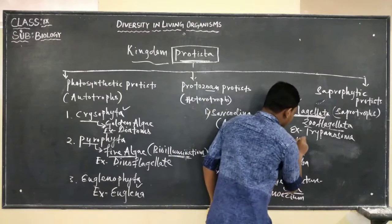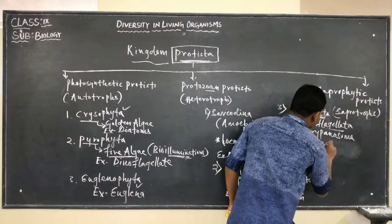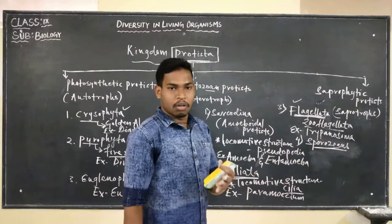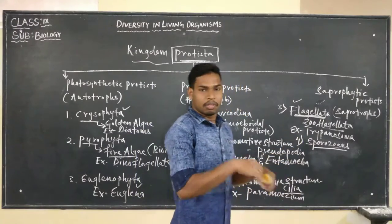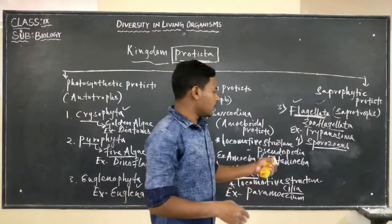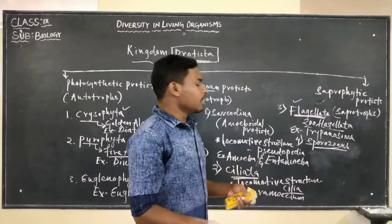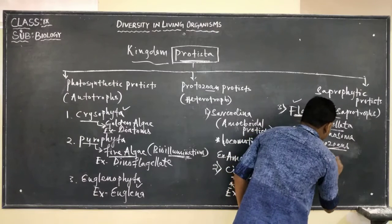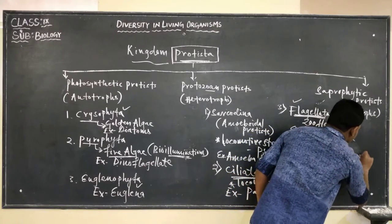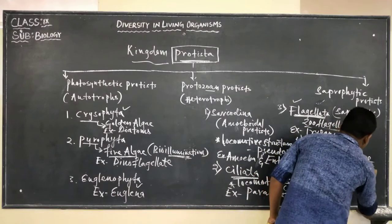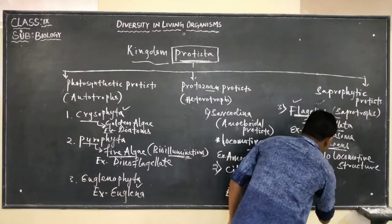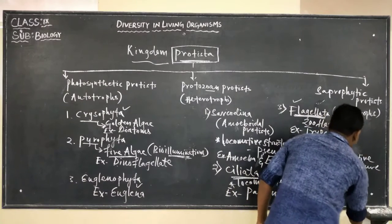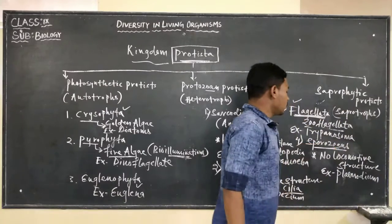The fourth classification is Sporozoans. In this group there is no locomotive structure — they do not require any locomotive structure because they are endoparasites; they are present inside our body. So no locomotive structure is found. An example of organism is Plasmodium, the malarial parasite, which is placed under Sporozoans.